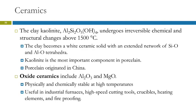One type of clay is kaolinite, and it has this complex formula. You heat it above 1500 degrees Celsius and it undergoes chemical and structural changes that are not reversible. That moldable clay becomes a white ceramic solid with an extended network of silicon-oxygen and aluminum-oxygen tetrahedra, covalently bonded. Kaolinite is the main component in porcelain — we call those fine porcelain china dishes 'china' because it originated in China.